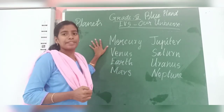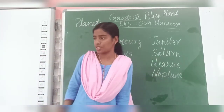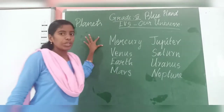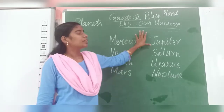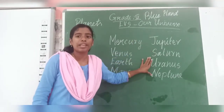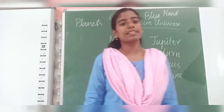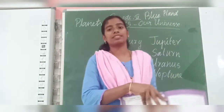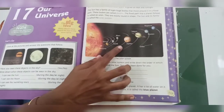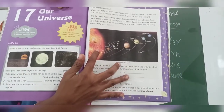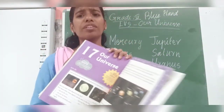Learn about these eight planets repeatedly. Today itself, learn the spellings and pronunciation. The order again: Mercury, Venus, Earth, Mars, Jupiter, Saturn, Uranus, and Neptune. In the next class, we will look at a beautiful picture of the solar system in your book — a big picture. The sun is in the center and the eight planets revolve around it. Each planet has its own features — for example, Saturn has a ring around it, and Jupiter is the biggest one.